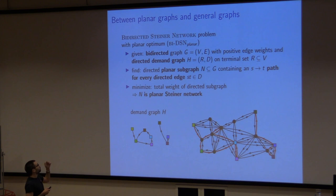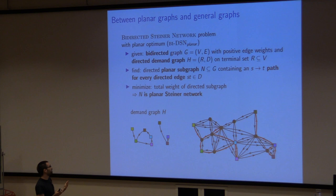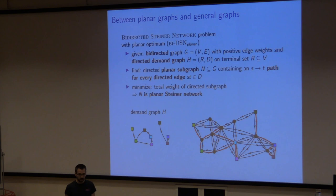The problem is defined as follows: the input is a bidirected graph plus a demand graph — a directed graph on only the terminal set, telling us what connections we want. Even though the input is bidirected but otherwise unrestricted, I want to find a planar solution. This interpolates between planar and general input graphs. For every directed edge (s,t) in the demand graph, I want a path from s to t in the planar solution of minimum weight. This is how far we can push the Borchers-Du theorem — and no further.